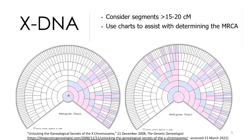If you're a male, you can use this family tree chart that shows the inheritance pattern for a male. Remember that there are not as many SNPs tested on the X chromosome as there are on the other autosomes — chromosomes one through 22. So you need to consider segments that are 15 to 20 centimorgans or larger when you're working with X DNA.